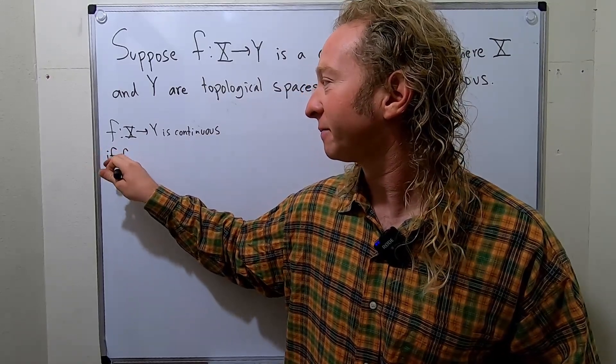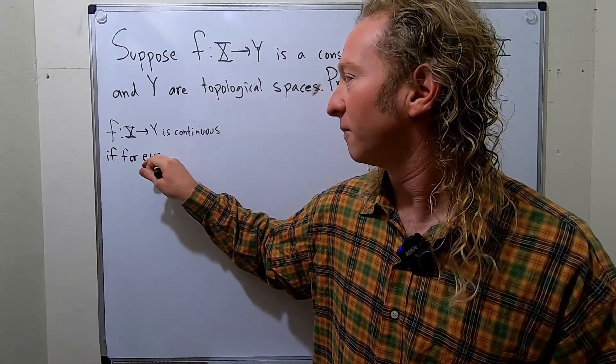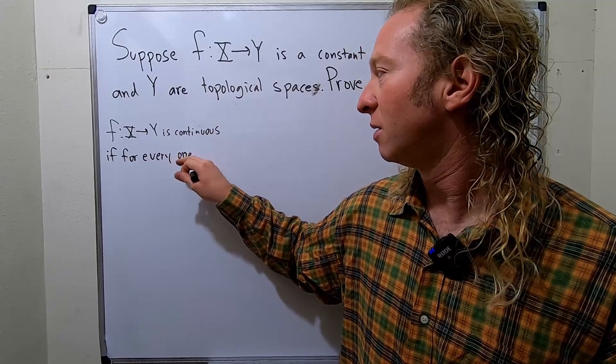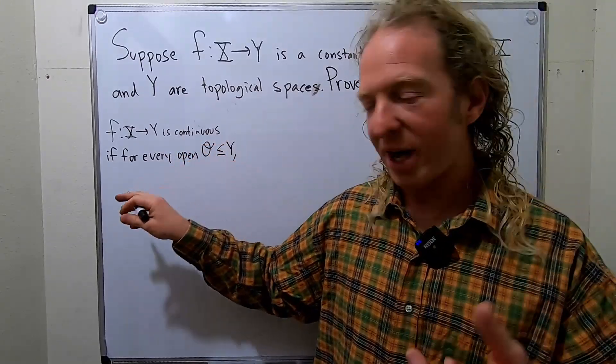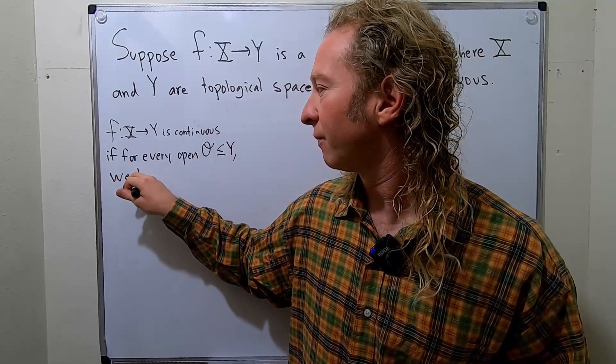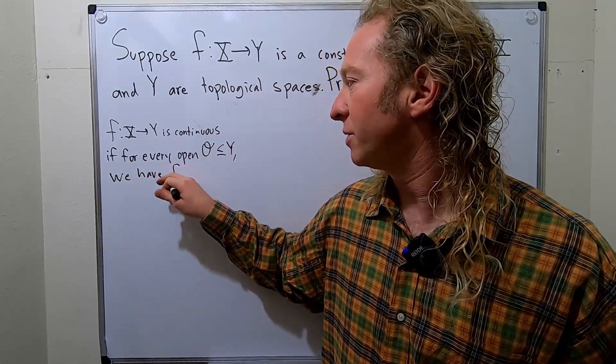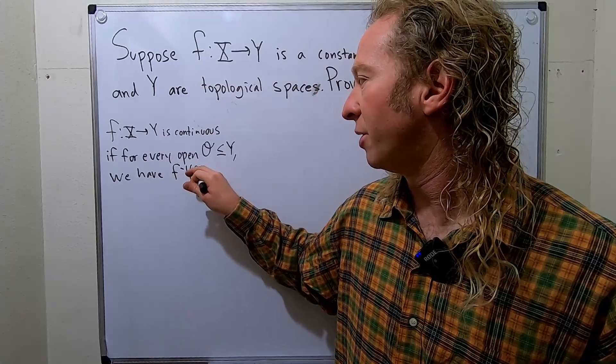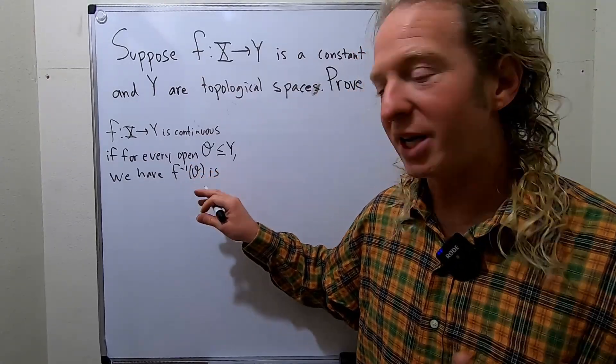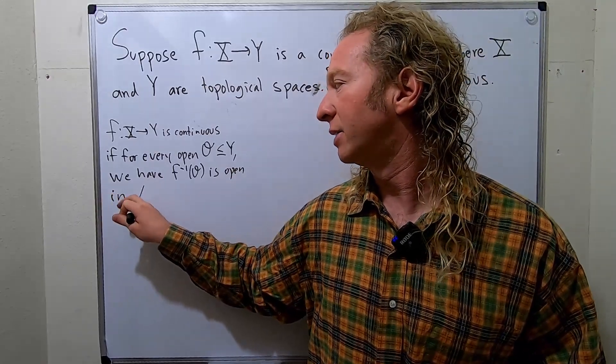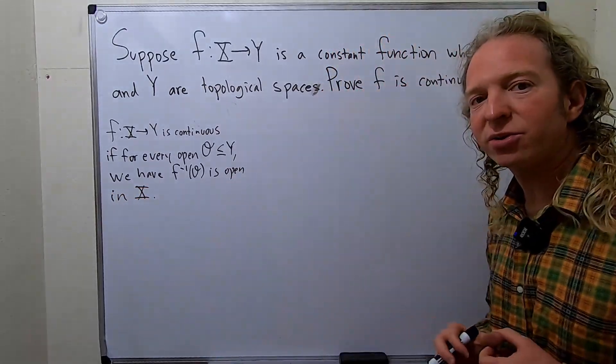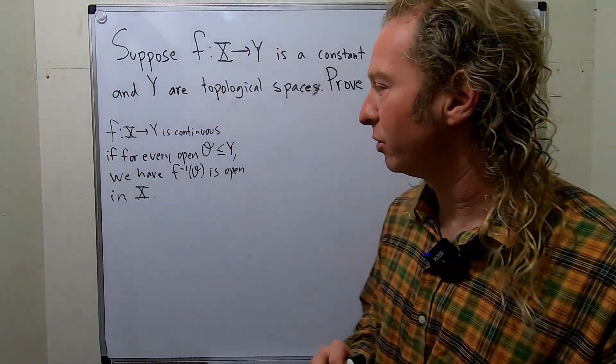If for every open O contained in y, we have that the inverse image of O under f is open in x. So this is open in x. So that's the topological definition of continuity.